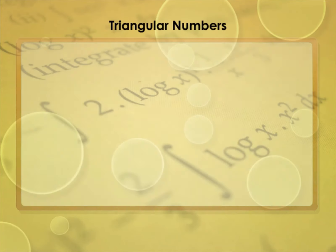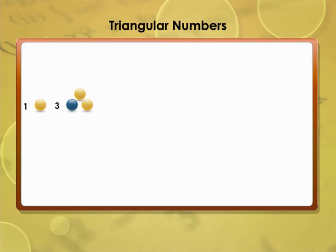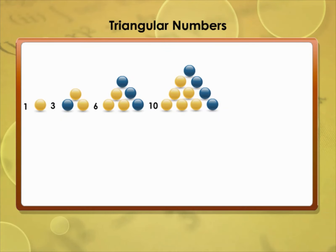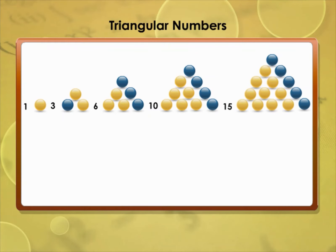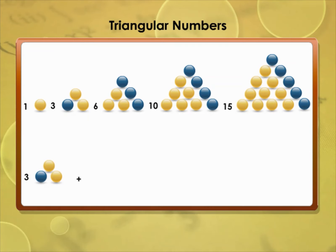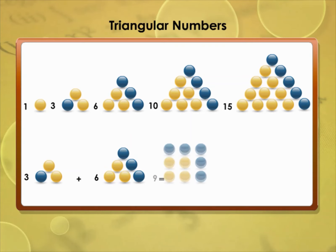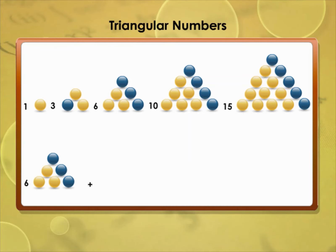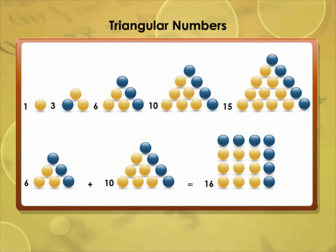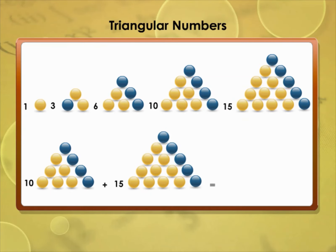Triangular numbers: the number 1 can be represented by 1 dot, the number 3 by 3 dots in a triangular shape, 6 by 6 dots, 10 by 10 dots, and 15 by 15 dots in a triangular shape. By combining triangular numbers 1 and 3 we get 4; combining 3 and 6 gives 9; combining 6 and 10 gives 16; combining 10 and 15 gives 25. In this way, subsequent square numbers can be obtained from triangular numbers.